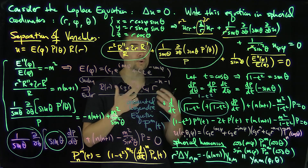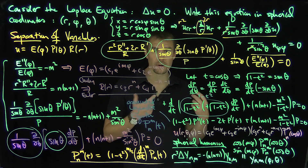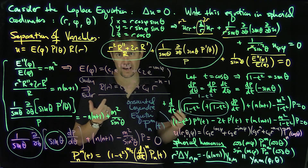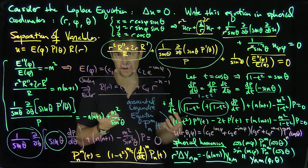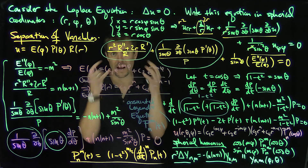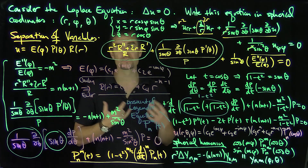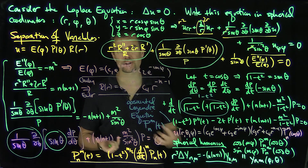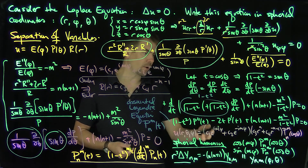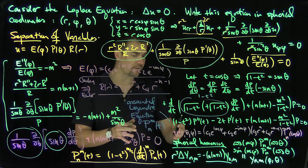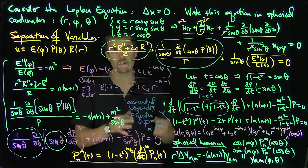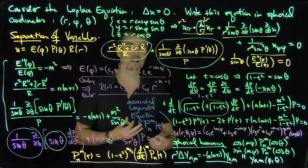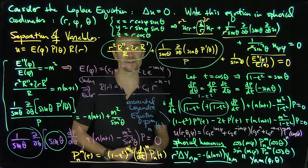These spherical harmonics come up all the time in statistical mechanics and quantum mechanics, because the Schrödinger equation involves the Laplacian. When you look for the angular part of solutions to the Schrödinger equation, spherical harmonics arise naturally. Whenever there is spherical symmetry in a problem involving the Laplacian, spherical harmonics play an essential role in understanding the analysis.